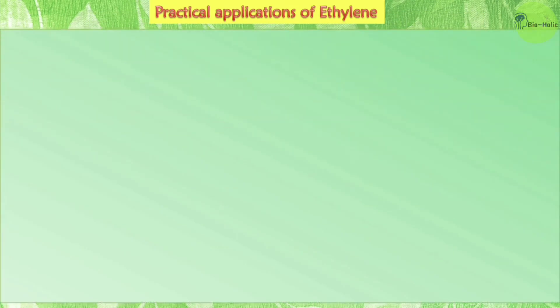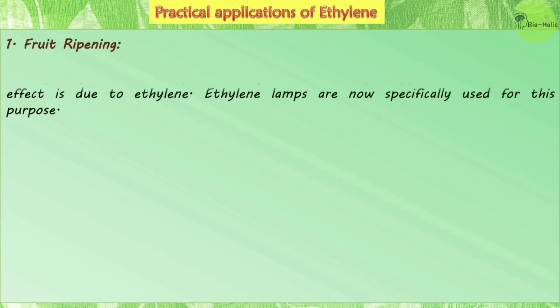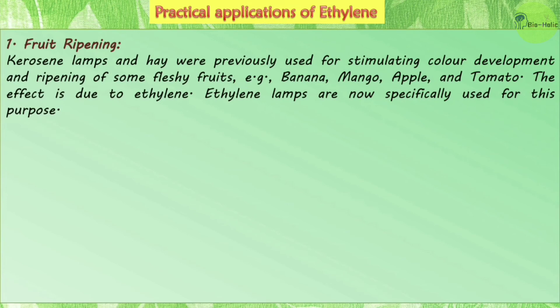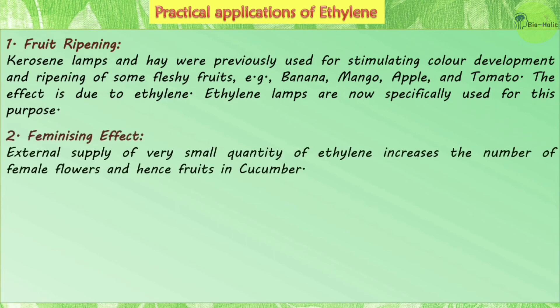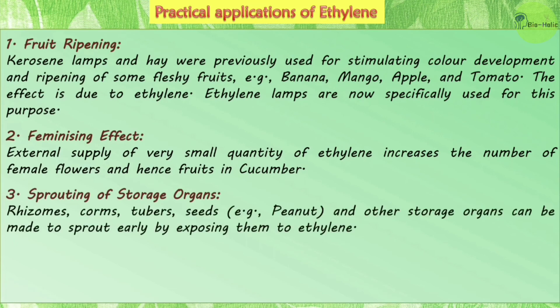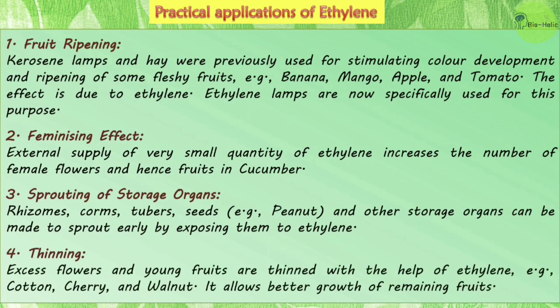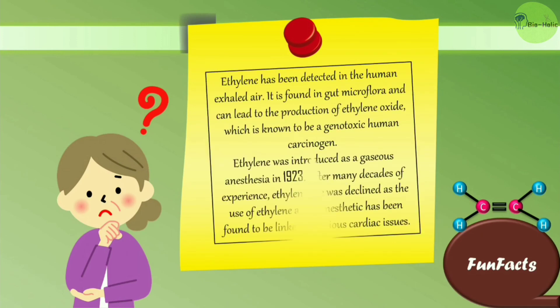Regarding practical applications of ethylene: kerosene lamps and hay were previously used for stimulating color development and ripening of fleshy fruits such as banana, mango, apple, and tomato. Ethylene lamps are still specifically used for this purpose. Externally supplied ethylene in very small quantities increases the number of female flowers and hence fruits in cucumber. Storage organs such as rhizomes, corms, tubers, and seeds like peanut can be made to sprout early by exposure to ethylene. Excess flowers and young fruits in cotton, cherry, and walnut are thinned using ethylene, allowing better growth of remaining fruits.